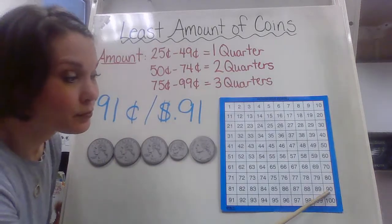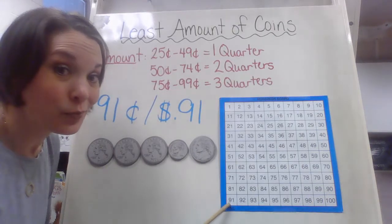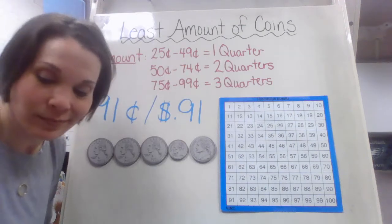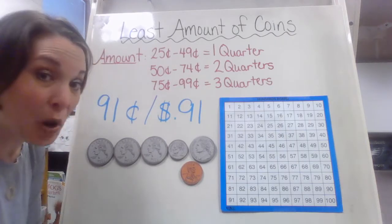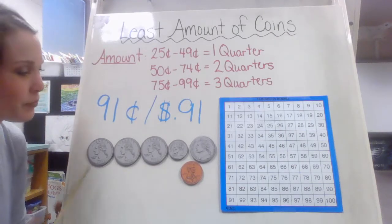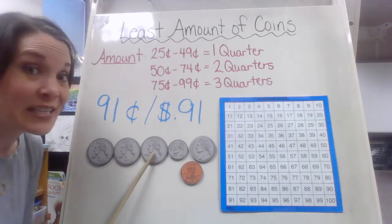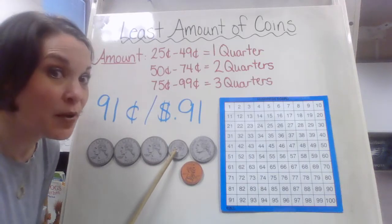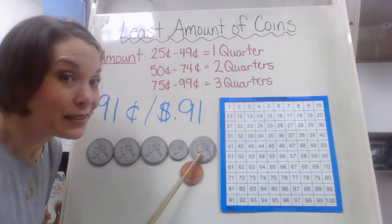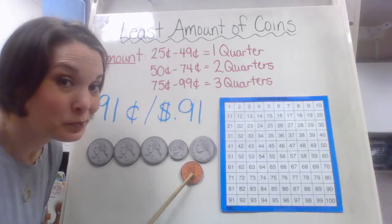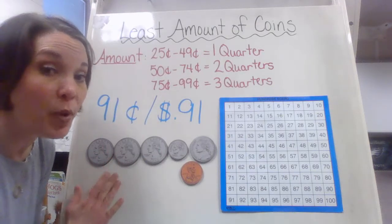Now I'm at 90, and I need to get to 91. What do you think I need now? One penny. Let's go ahead and count: 25, 50, 75. Ten more is 85. Five more is 90. One more is 91. So again, that is going to be my least amount of coins possible.